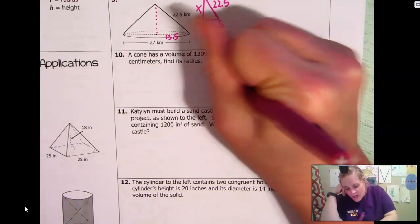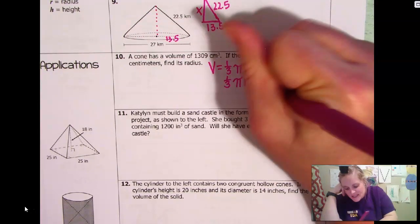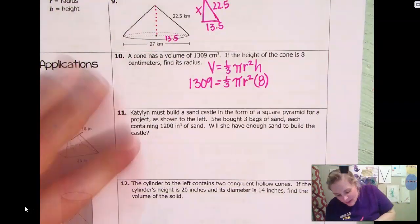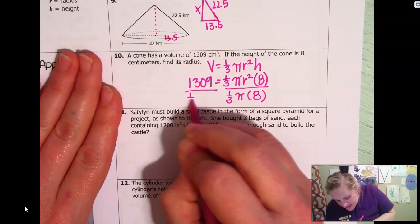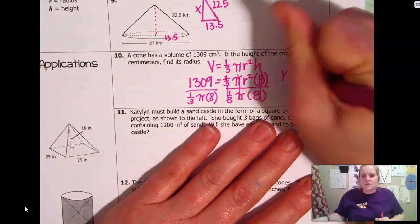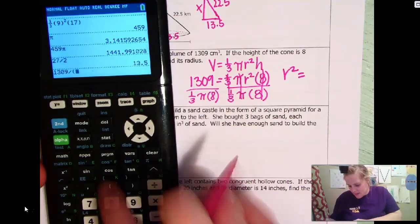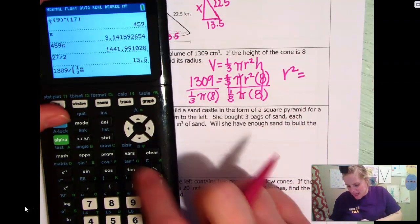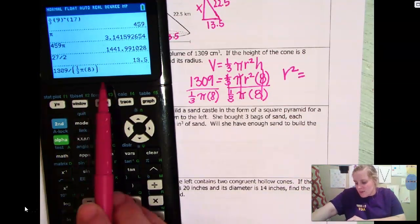So you just have to work backwards using your formula. So 1 third pi. That all stays the same. We don't know our radius. The height is 8. And our volume is 1,309. Okay? So basically what I'm going to do is I'm going to divide by everything except for r squared. That is going to cancel out everybody but r squared. So r squared equals, I just type in my calculator.